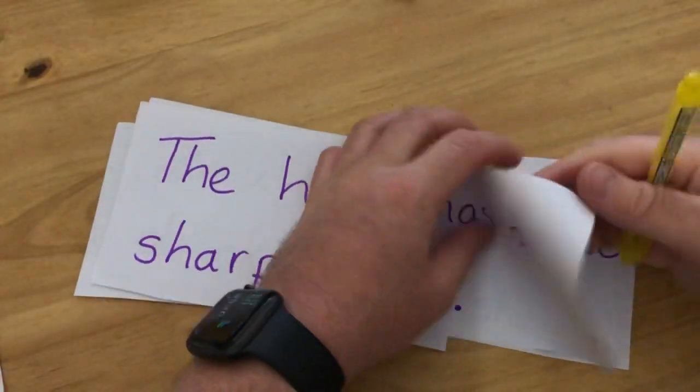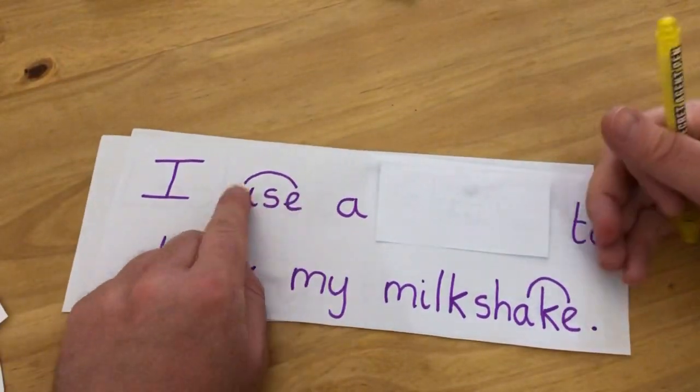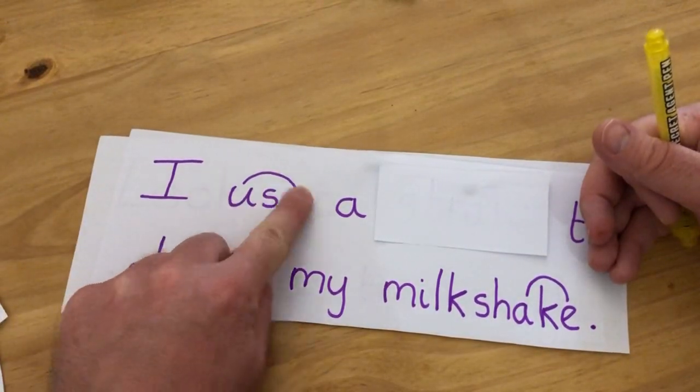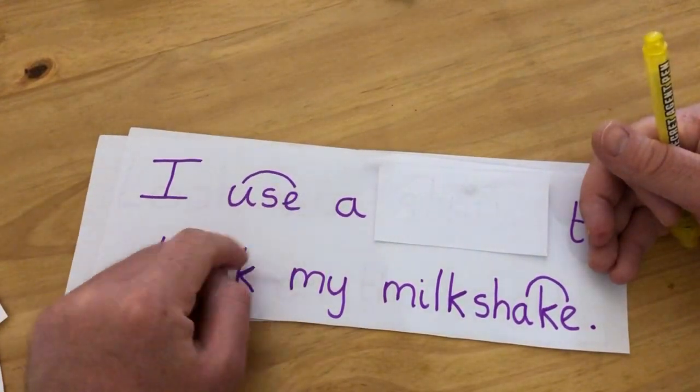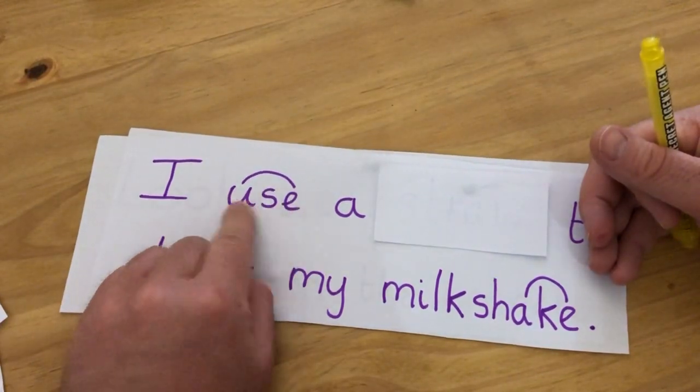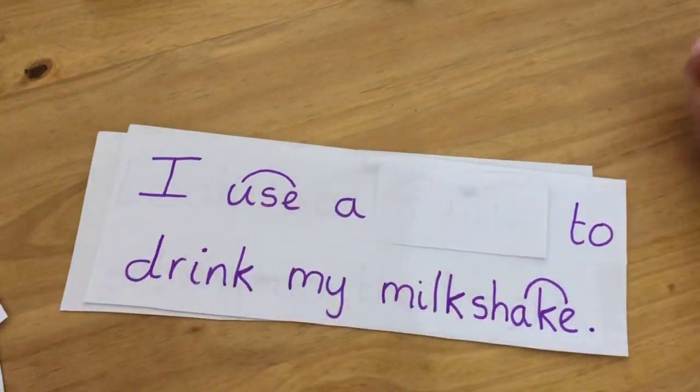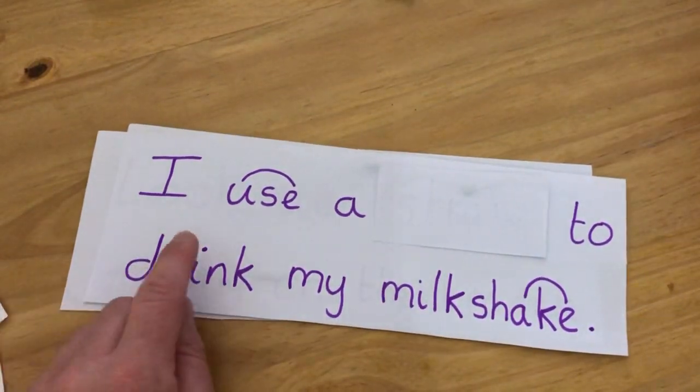Oh, now can you remember there's two ways to say that split digraph? You can say 'ooh' or you can say 'you,' and in this word it's 'you.' Use. Use. And that split digraph is A, A. Okay, let's go for it.